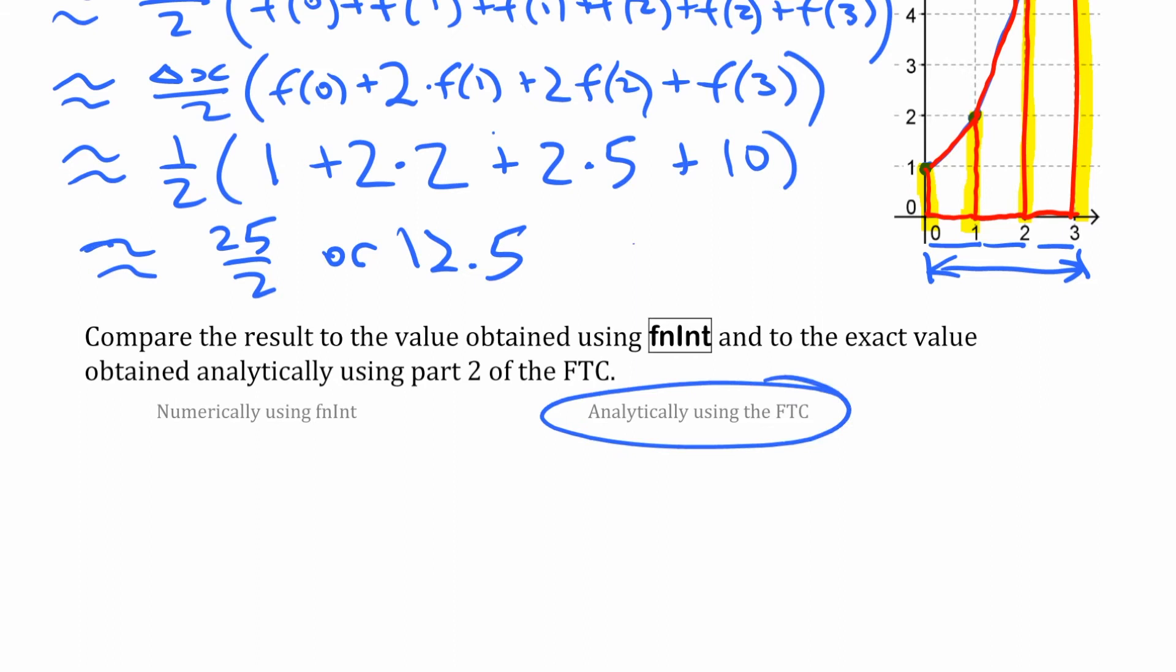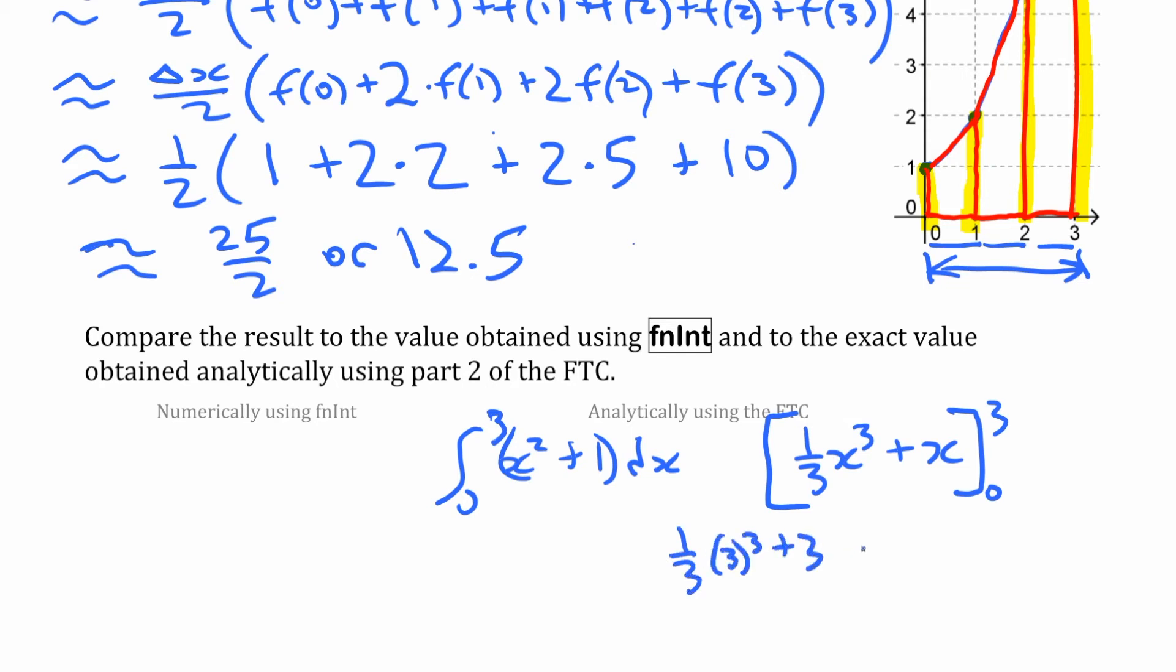And then if we're going to use the fundamental theorem of calculus to do this using an antiderivative, if we want the integral from zero to three of x squared plus one, we're going to use an antiderivative of x squared plus one. So in other words, an antiderivative, the simplest one is one third x cubed plus x. And we're going to evaluate that from zero to three. Zero, three, subtract the two of them. So we have one third three cubed plus three minus, well this is going to be zero, but one third zero cubed plus zero. So if we work that out, we have 27 divided by three, nine. This is nine plus three is 12. 12 minus zero is 12. So it gives you that same number.